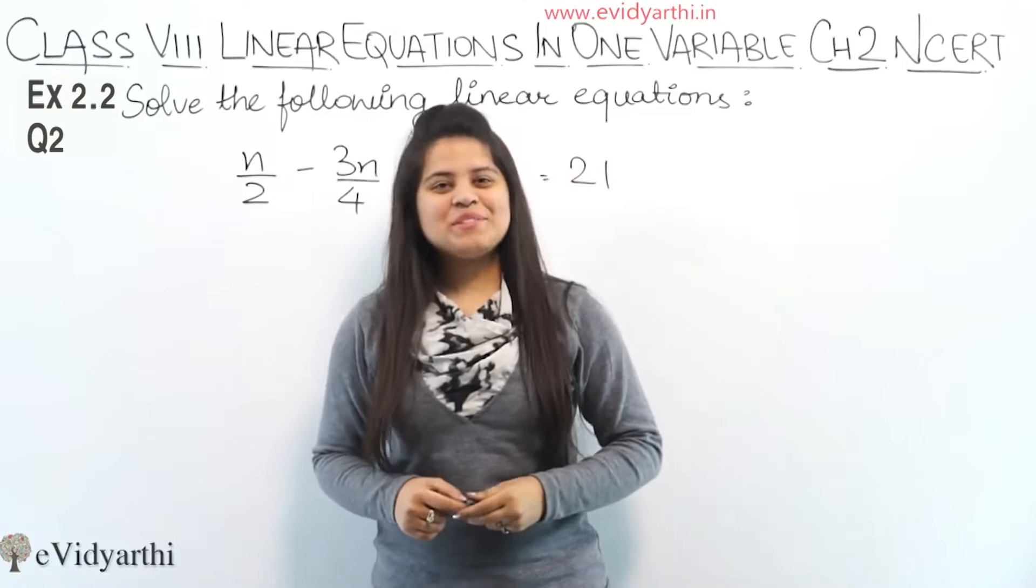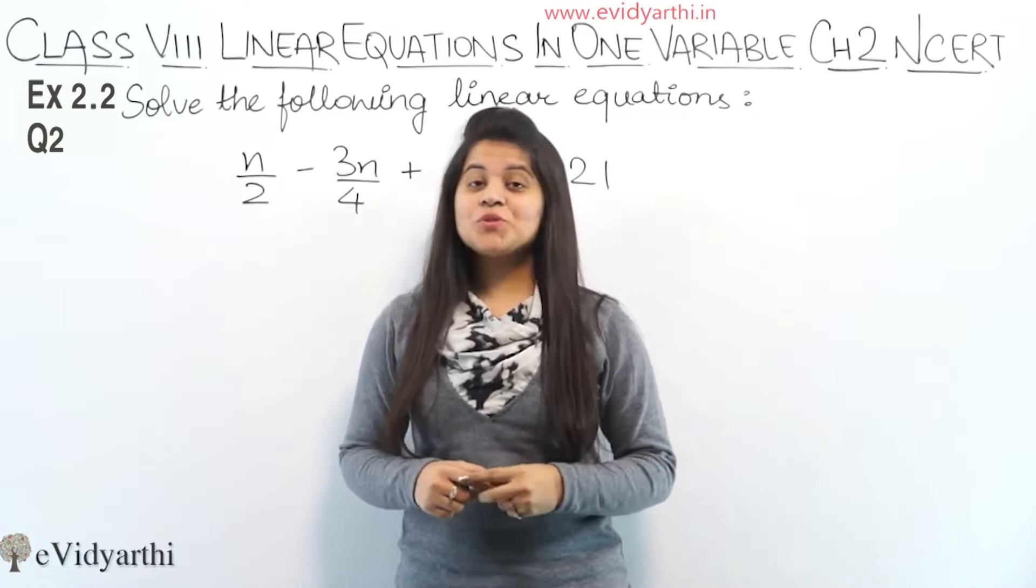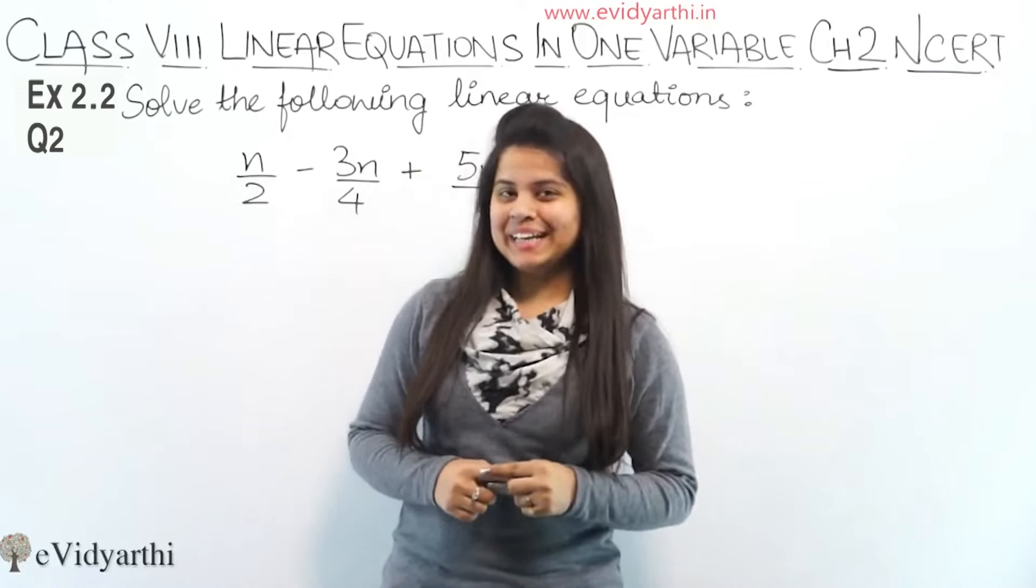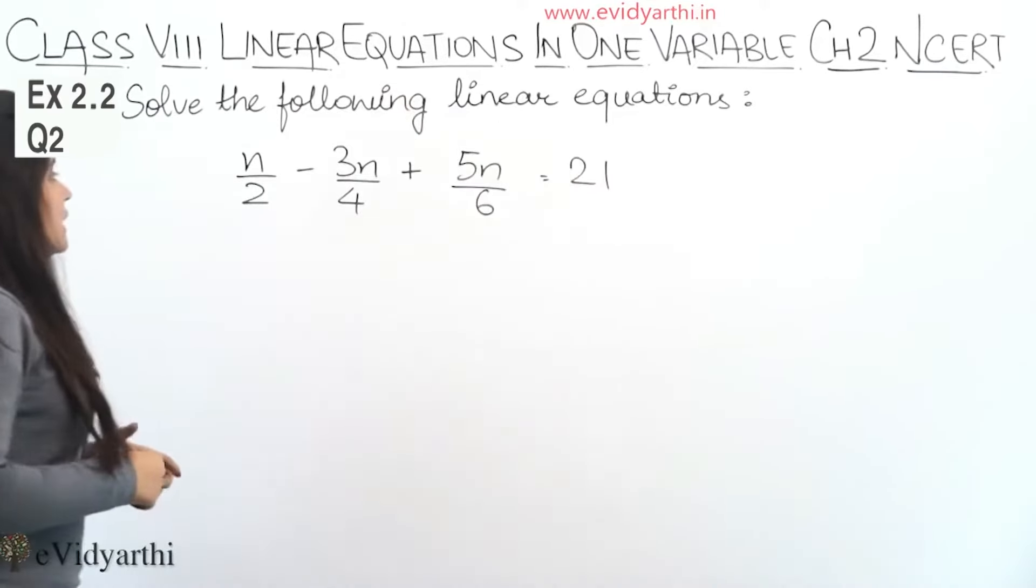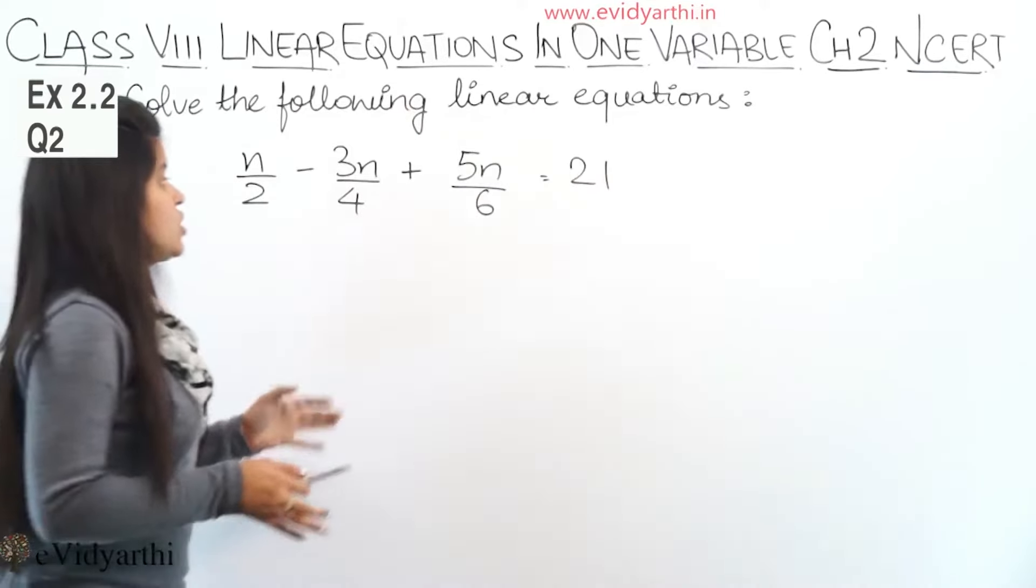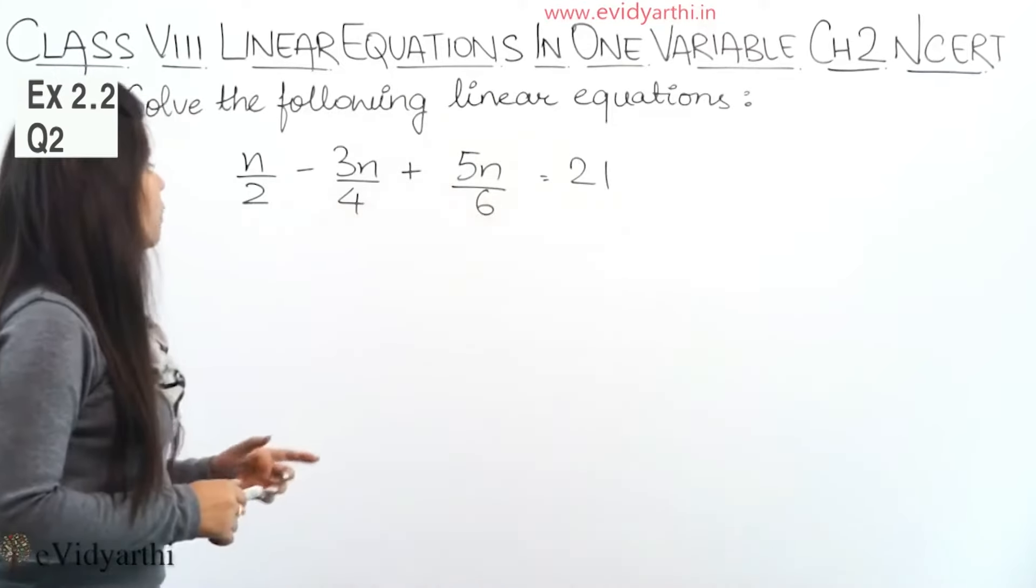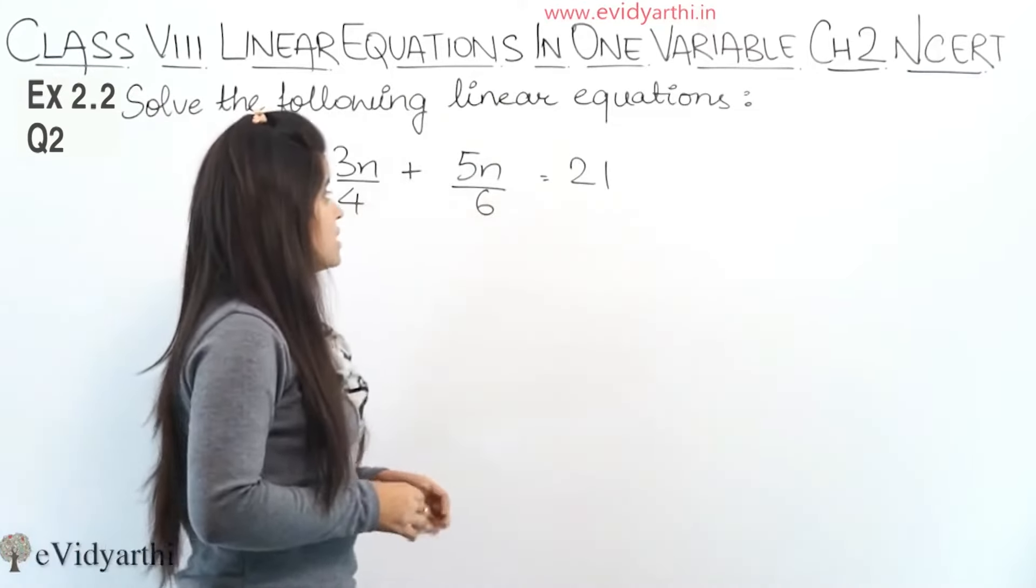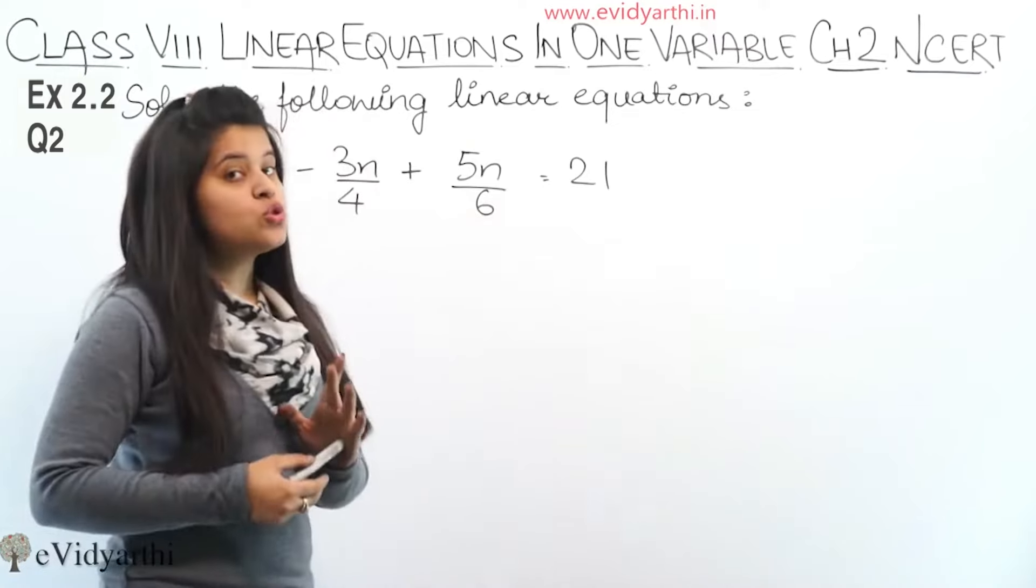Hello everyone, this is Marci from eVidyarthi and I'm going to question number 2, exercise 2.5. In this question again we have to solve this linear equation. The equation is n upon 2 minus 3n upon 4 plus 5n upon 6 equals 21.